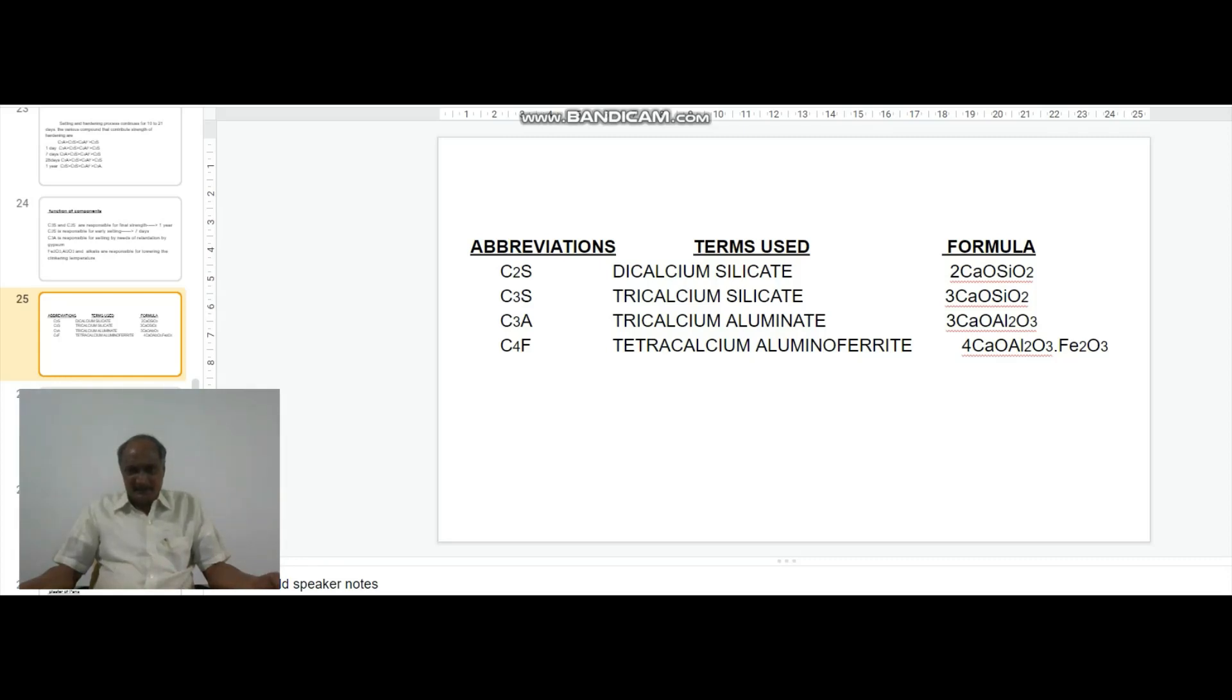C3A stands for tricalcium aluminate having the chemical composition 3CaO·Al2O3. Finally, C4AF stands for tetracalcium aluminoferrite having the composition 4CaO along with Al2O3 and Fe2O3.